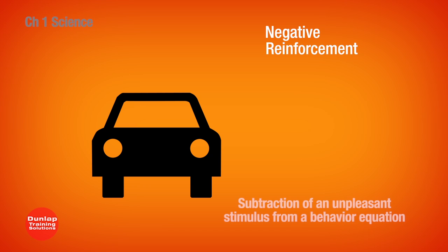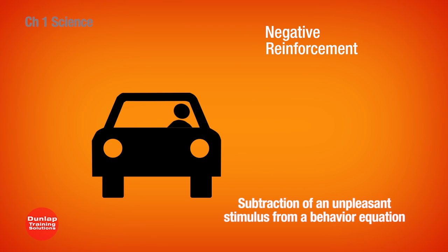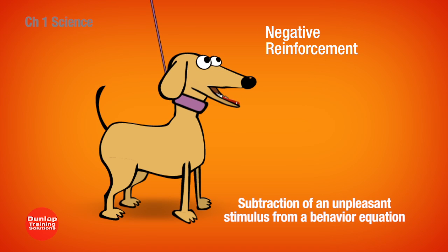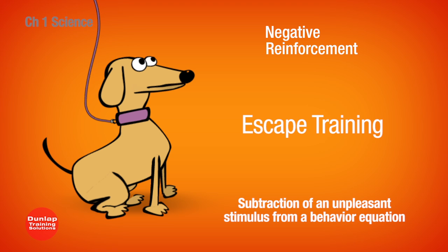Negative reinforcement is the subtraction of an unpleasant stimulus from a behavior equation. For example, we get in our car and the first sound we hear is the seat belt warning sound. The sound continues until we put on our seat belt. For a dog, continuous pressure is applied until a behavior is accomplished, and then we remove the pressure — such as pulling up on the dog's collar until the dog sits. This type of training is also called escape training.